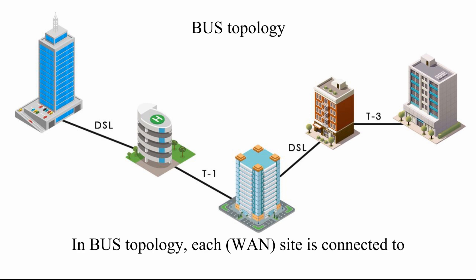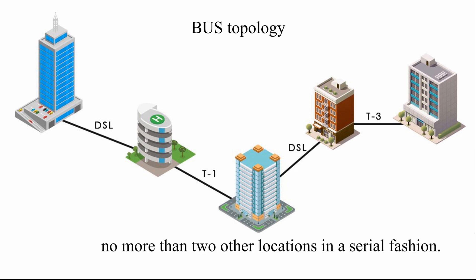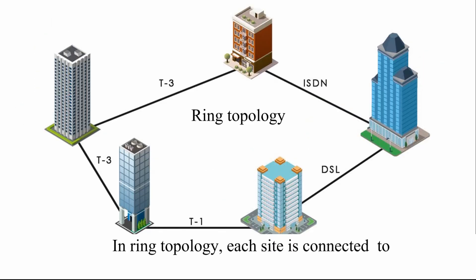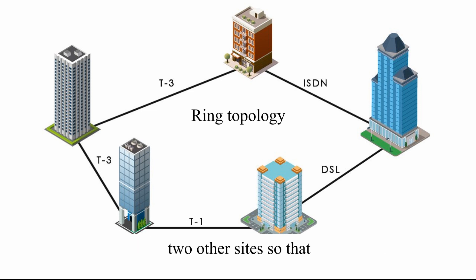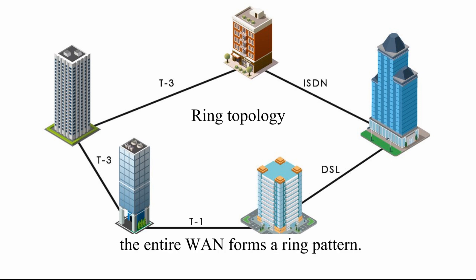In bus topology, each site is connected to no more than two other locations in a serial fashion. In ring topology, each site is connected to two other sites, so that the entire WAN forms a ring pattern.